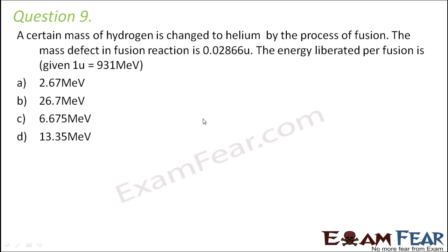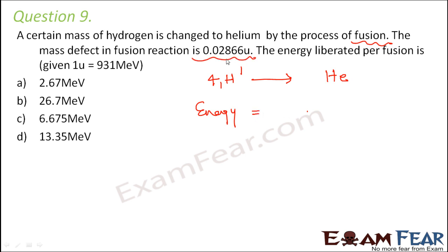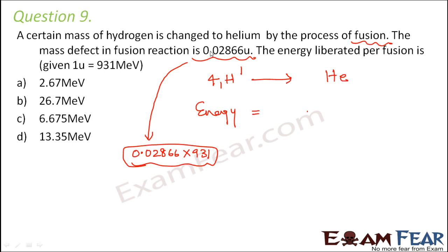We are talking about the fusion reaction. Normally in a fusion reaction, four hydrogen nuclei combine to form a helium nucleus. So four hydrogens combine to form a helium. The energy liberated in one fusion equals the energy equivalent of the given mass defect: 0.02866U × 931 MeV.